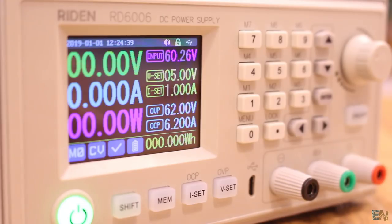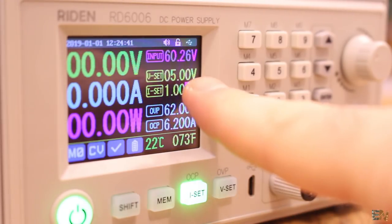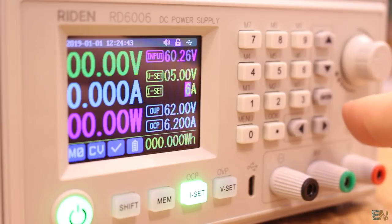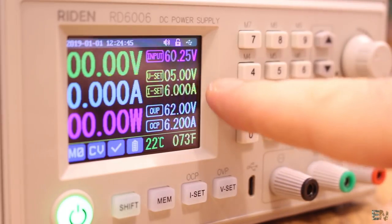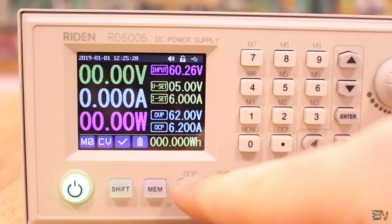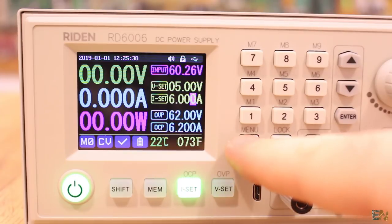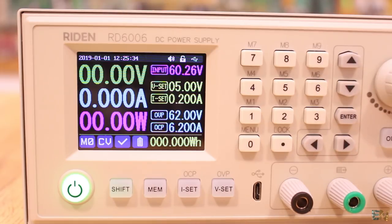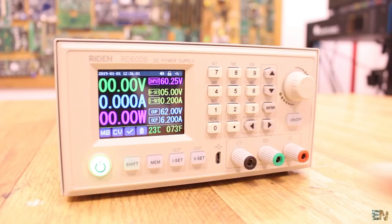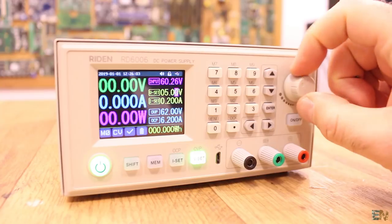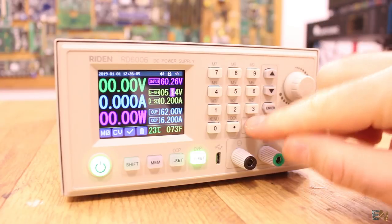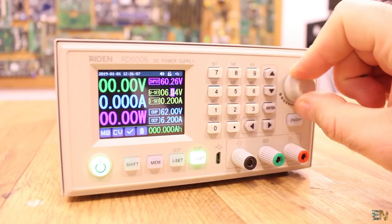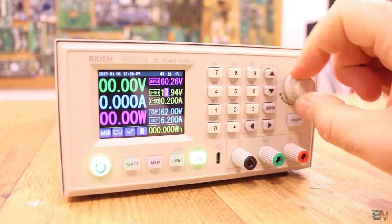The same goes for the current value. This time I press the ISET button and then I type the current value, and have in mind that the maximum current is 6A. So for example, I type 0.2 and then enter, and the current is set to 200mA. You can also use the knob to set these values. So press the VSET or ISET buttons and then use the knob to increase or decrease the values, but it's a lot faster using the buttons.